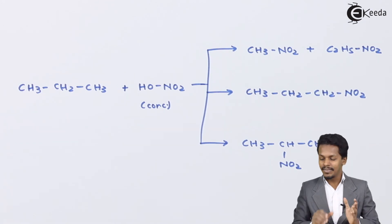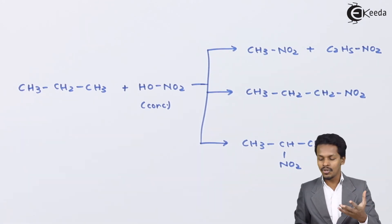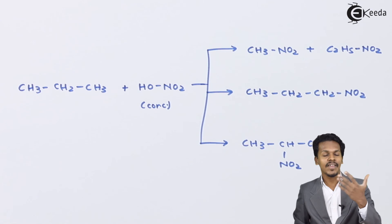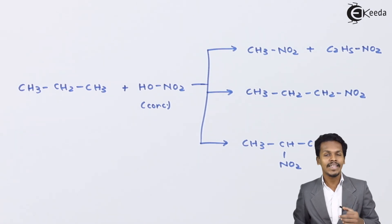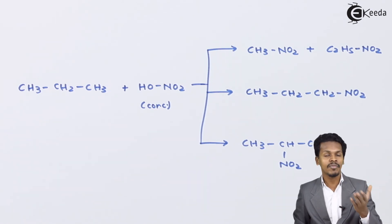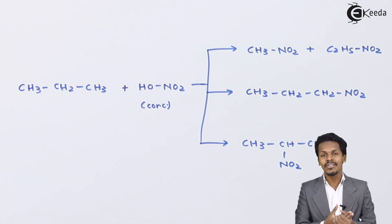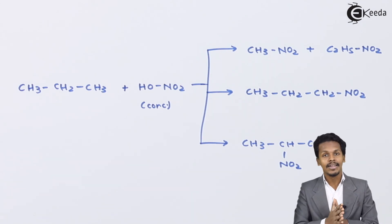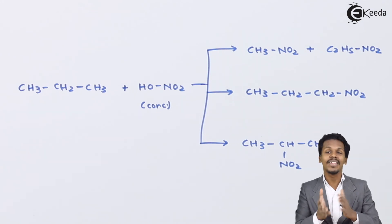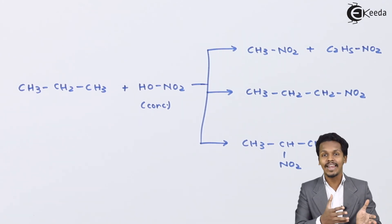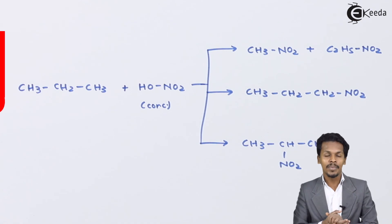We have considered the nitration of propane and ethane, but we have not considered the nitration of methane. The reason is that methane's nitration is very difficult, so direct nitration of methane is not possible. Therefore, we have to take the alkyl halide of methane and from that we can easily prepare nitromethane.